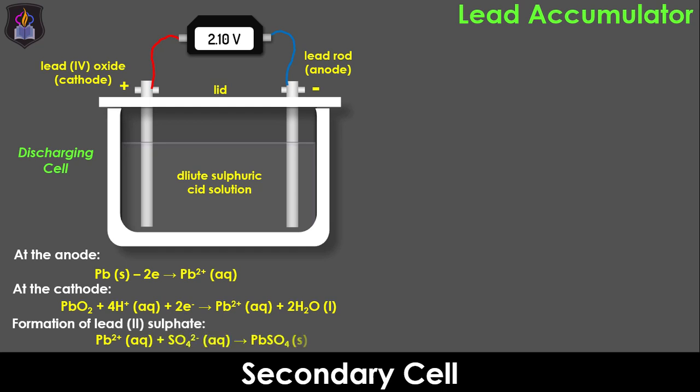The lead 2 ions combine with the sulfate ions in the electrolyte to form lead 2 sulfate which gets deposited on the two electrodes as seen on the screen. At this point, the density of the sulfuric acid decreases to about 1.15 grams per cm3 due to the absorption of the hydrogen and sulfate ions from the electrolyte and the EMF of the cell drops to about 1.8 volts. When this happens, we say the cell has run down and needs to be recharged.